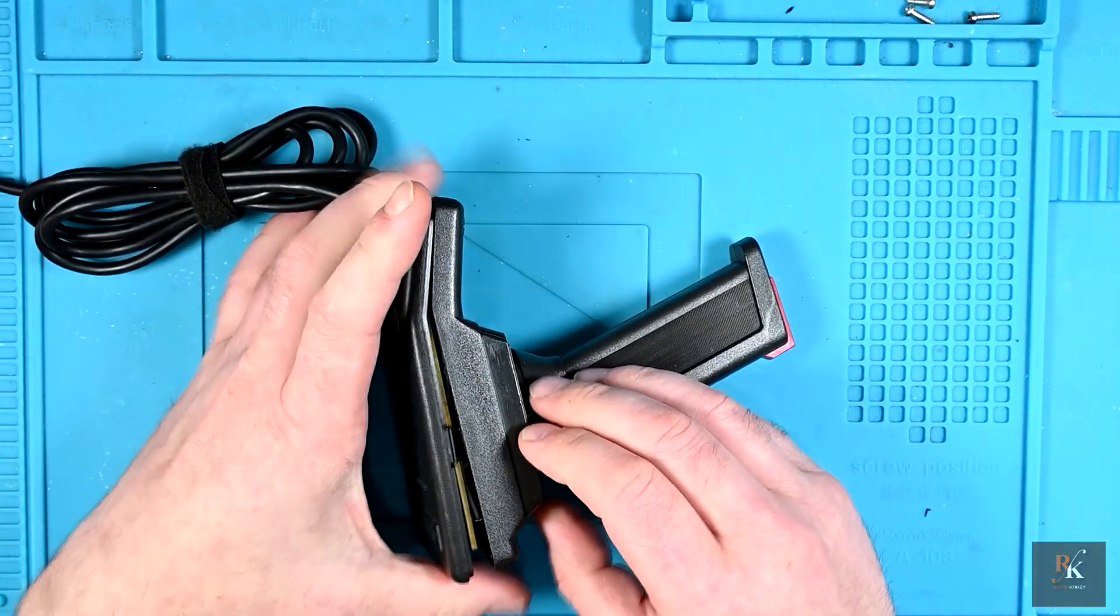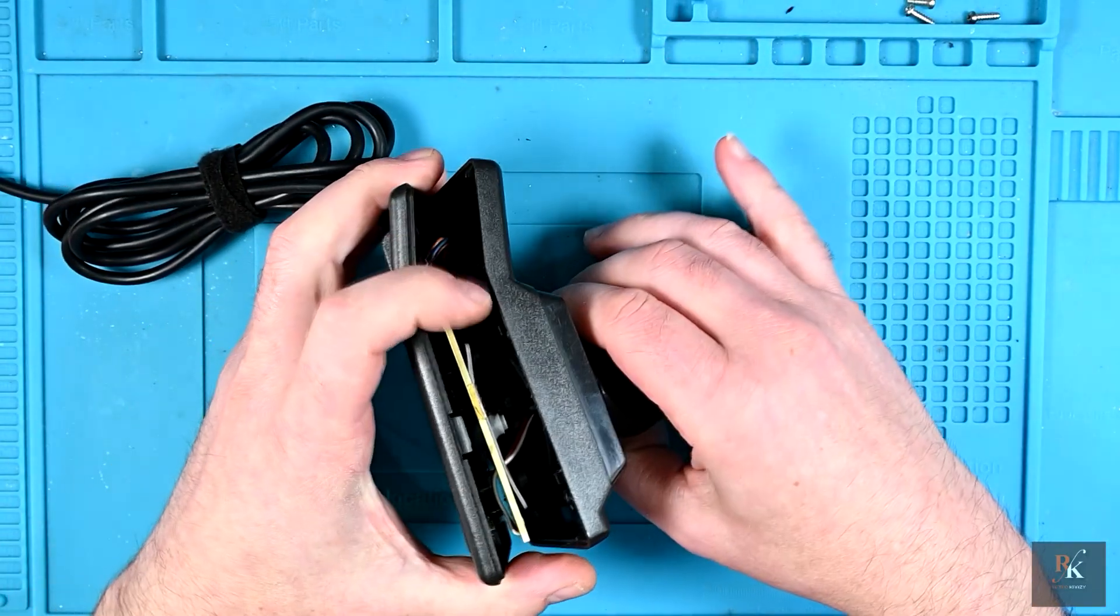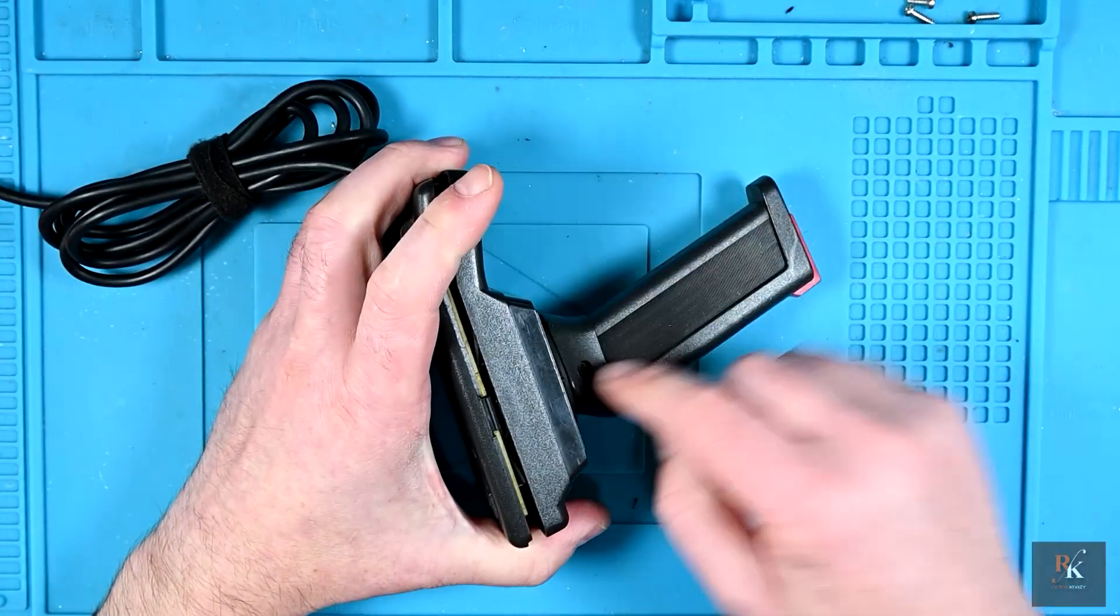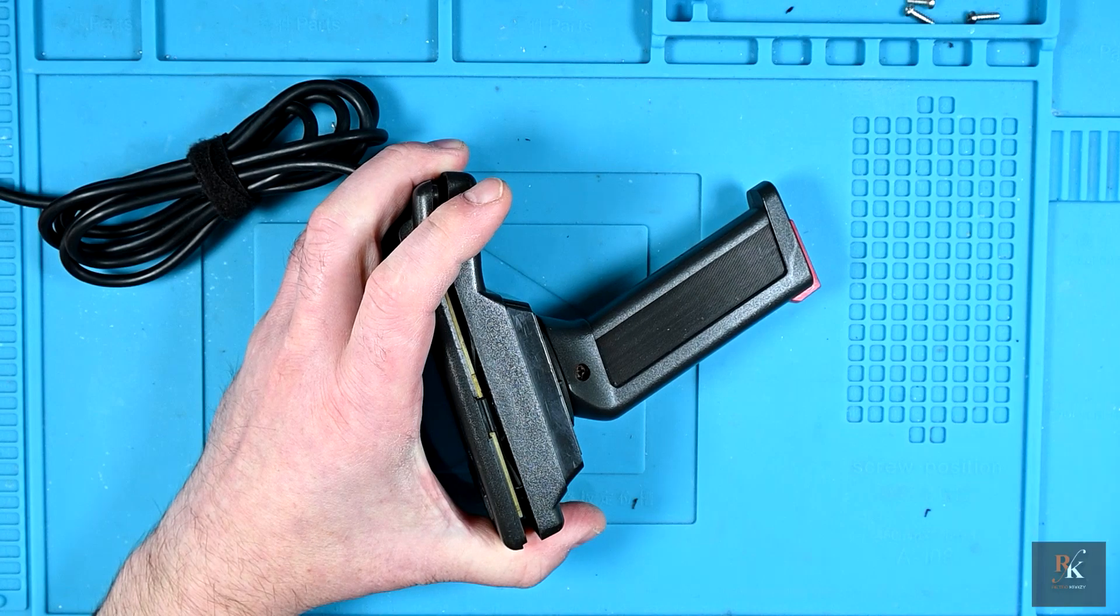So with the four screw points revealed, let's get this apart. Now it is also clipped at the side, you can see the clips here, but we do have wires running up, so before we go any further let's get this off.